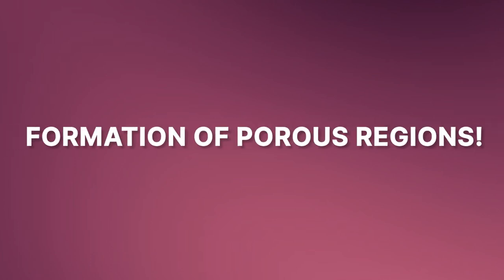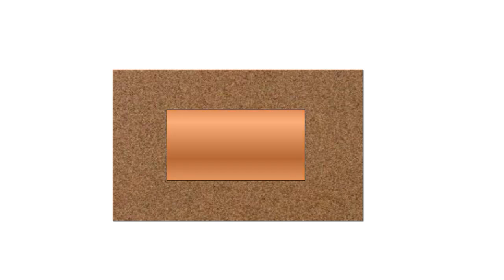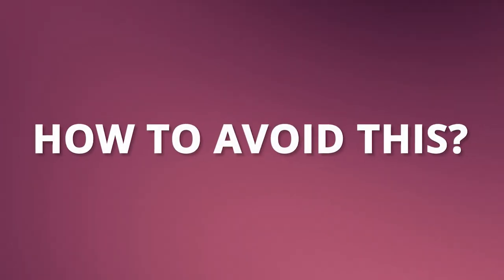Because of shrinkage, there is a possibility that porous regions will develop in the final casting. As the casting solidifies, its thinner section solidifies earlier than the thicker section. Because of this, the molten metal flows into the thicker regions which are yet to solidify, resulting in the development of porous regions. To avoid this, adequate molten metal should be provided, as it prevents formation of cavities due to shrinkage.